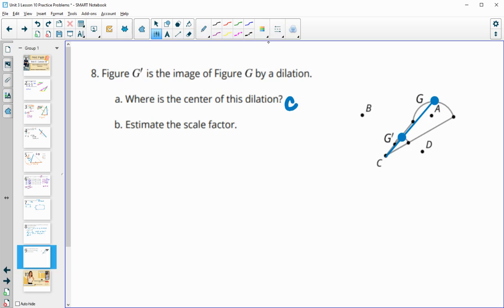And then we want to estimate a scale factor here. So G is here, G prime is closer to C. So we know that this is going to be less than one since the image got closer to the center. And so then you can just kind of guess how many times would this fit into this picture. So maybe three times. So then the scale factor would be something like one third.